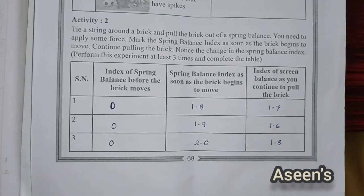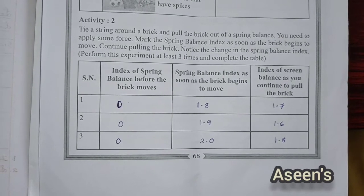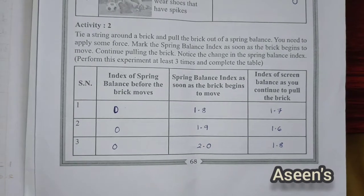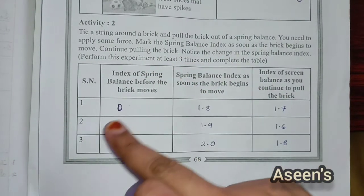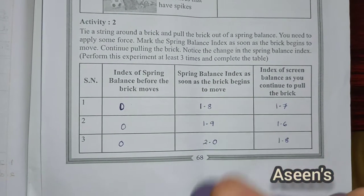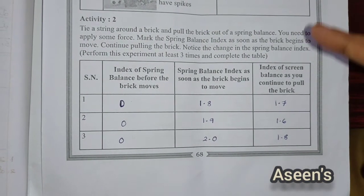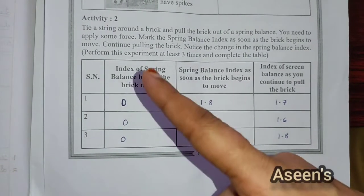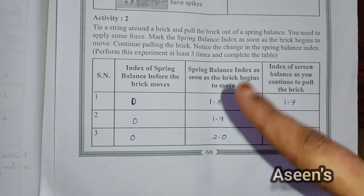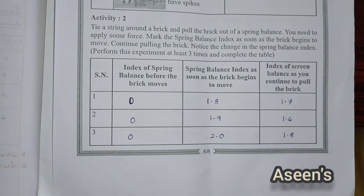Moving on to Activity 2, this is a spring balance experiment where we tie a brick to the spring balance and note readings for three trials: the index before the brick starts to move, when it just begins to move, and while continuing to pull it. In the first case it shows zero. The second and third columns show readings for my three trials.